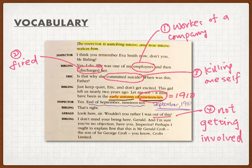The next phrase is 'committed suicide' — it means killing oneself. When we use suicide as a noun, we normally use 'committed' before it, so the whole phrase would be 'committed suicide.' And then 1910 — remember, that is the year when Eva was fired from the Berlin and Company.